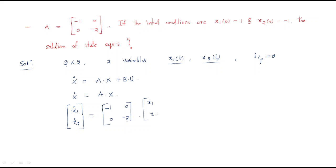From the matrix multiplication, we get two equations: x1-dot = -x1 (since -1·x1 + 0·x2), and x2-dot = -2·x2 (since 0·x1 - 2·x2).